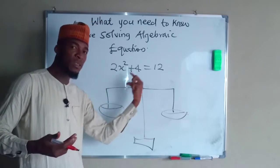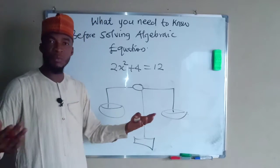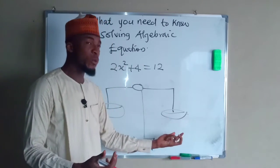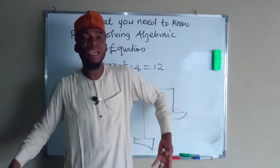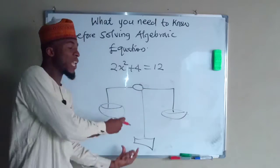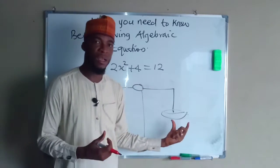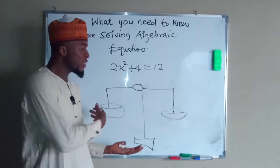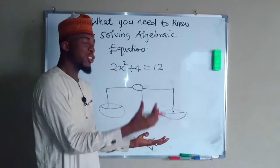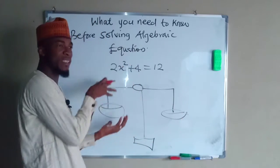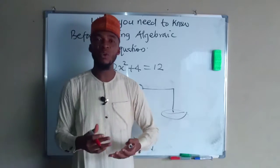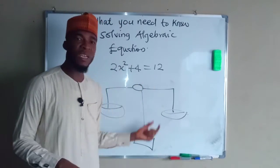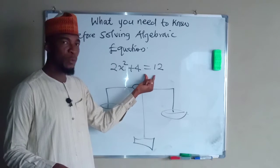To make the scale balance again, you have to add the same content to the left hand side. If you take something away from one side, it will equally be inclined — you have to take away the same content from both sides. The same applies if you multiply a weight; you have to multiply the same thing on both sides to keep it balanced. This same principle applies to the equality sign.